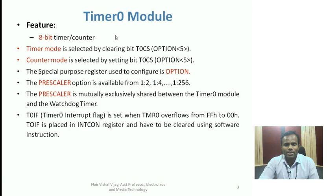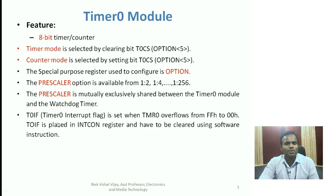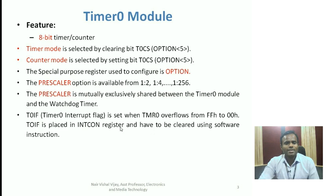Whenever Timer 0 overflows from 0xFF to 0x00, it can create an interrupt called the Timer 0 interrupt flag. This flag is set whenever it overflows and is found in the INTCON (interrupt control) register. This Timer 0 interrupt flag must be cleared by a software instruction — it does not clear by itself. This is the OPTION register which is used to configure Timer 0.